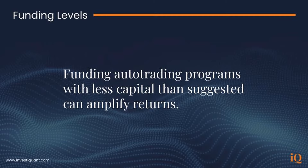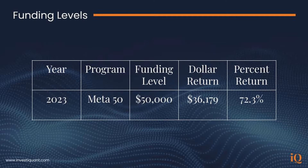Let's take a look at an example. Meta50 finished 2023 up $36,179, which is 72.3% of the IQ suggested funding level of $50,000. Had you funded with less capital than the suggested funding level — let's say $35,000 — the program would have finished up that same $36,179, which is now 103.4% on the year.